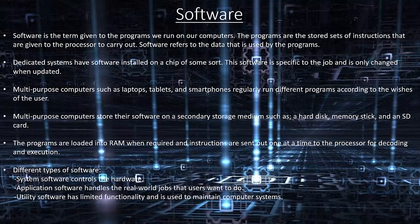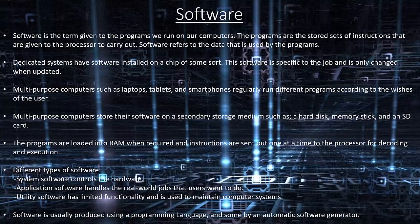Different types of software include system software which controls the hardware, application software which handles the real-world jobs that users want to do, and utility software which has limited functionality and is used to maintain computer systems. Software is usually produced using a programming language.